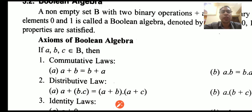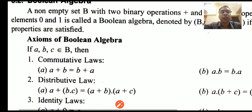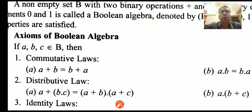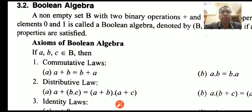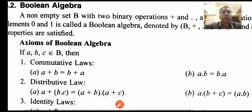If there are three variables a, b, and c, then the first law or axiom is the commutative law. For two operations — for the plus and for the dot — a plus b is equal to b plus a, and a dot b is equal to b dot a. This is the commutative law.